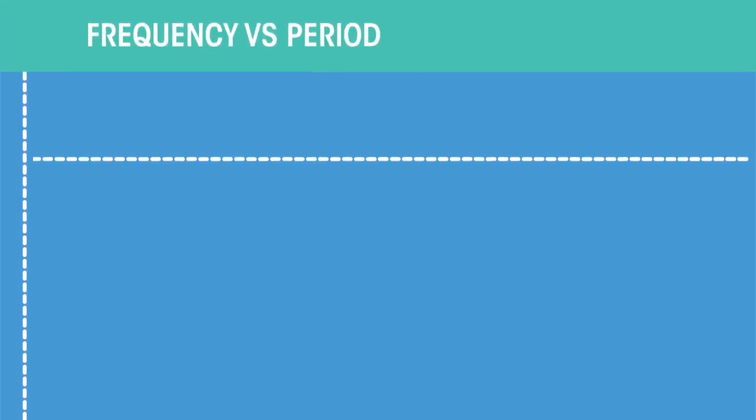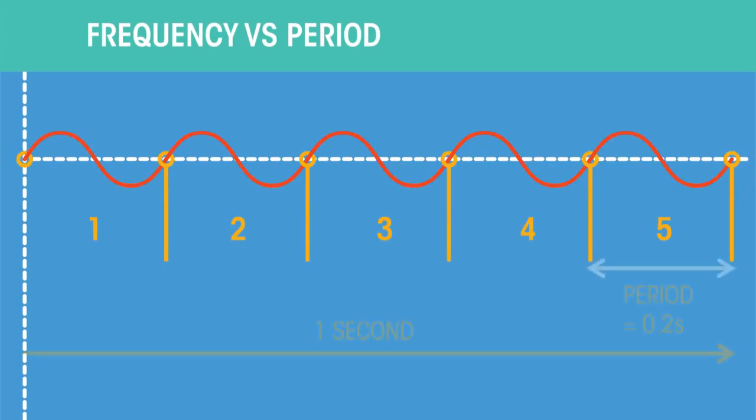The frequency and period are often confused. The frequency refers to how often something happens, whereas the period refers to the time it takes to happen.